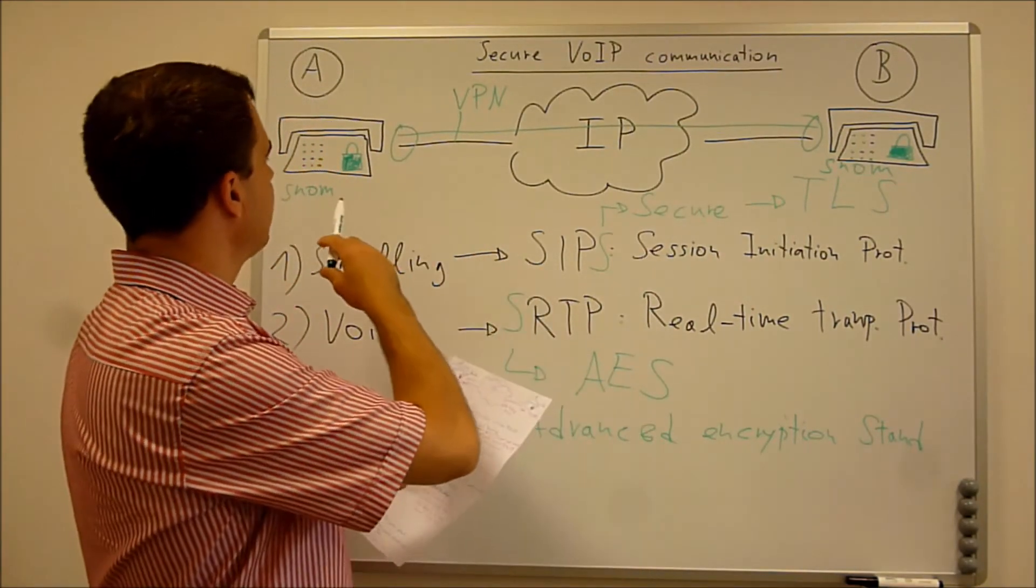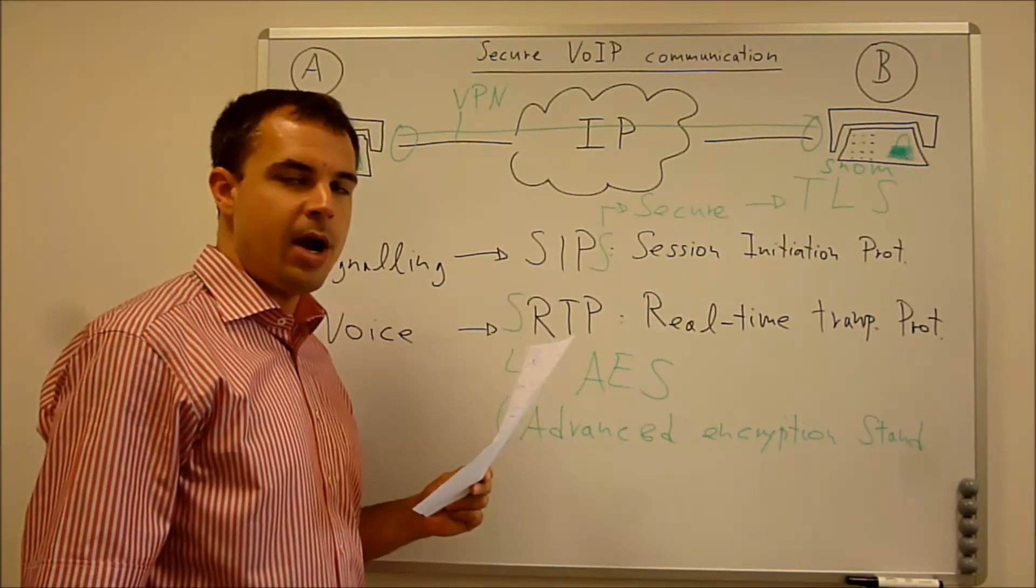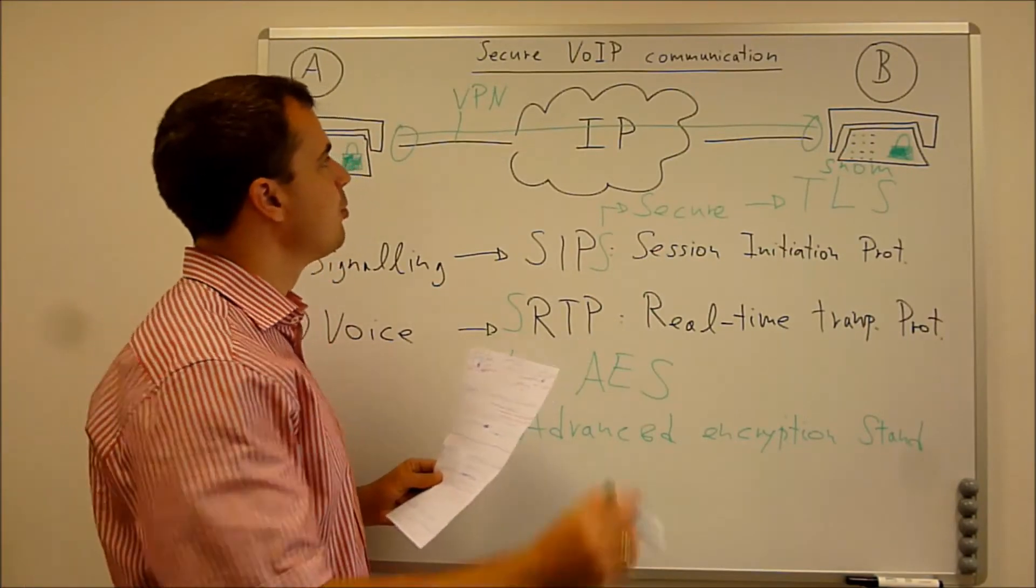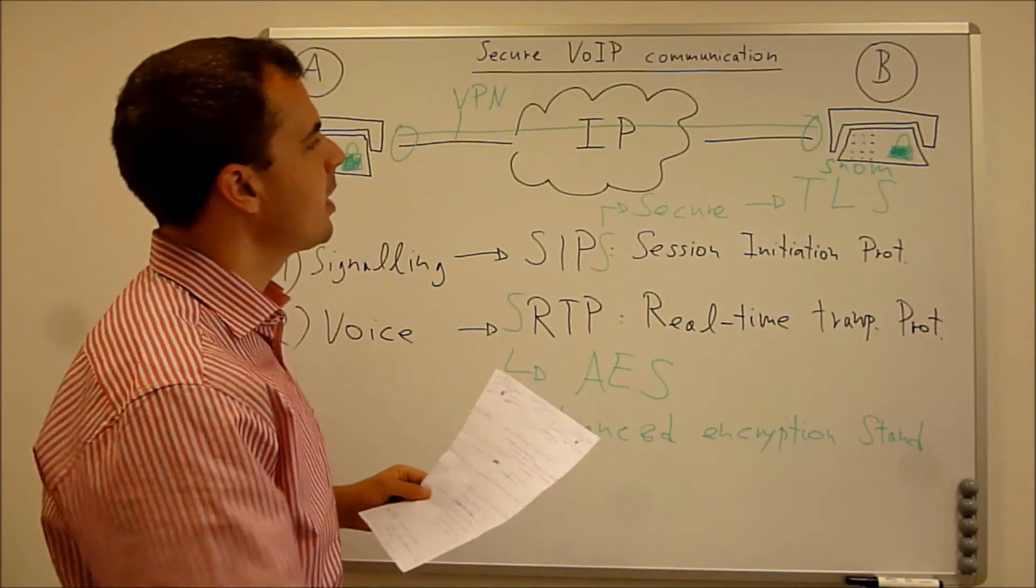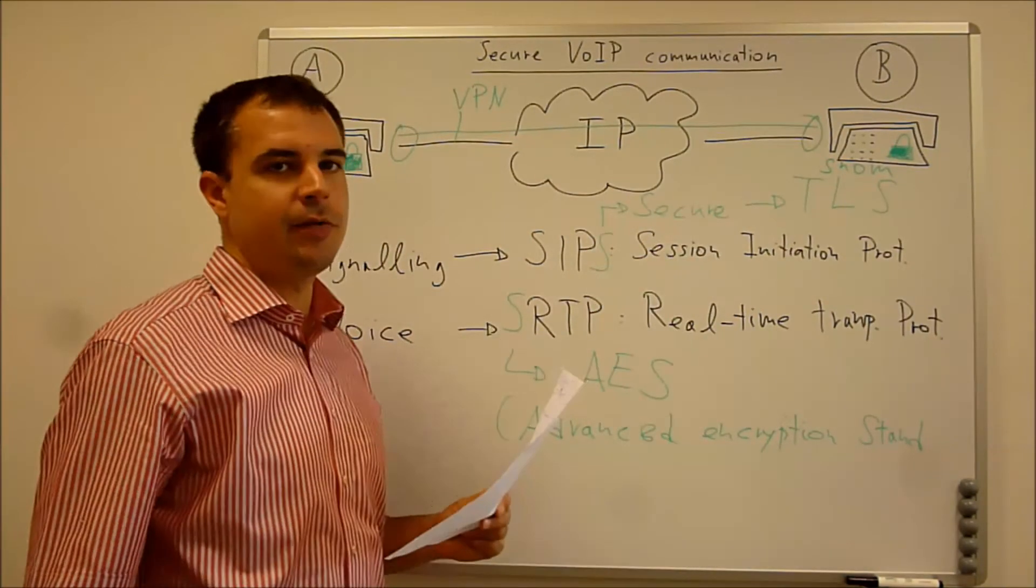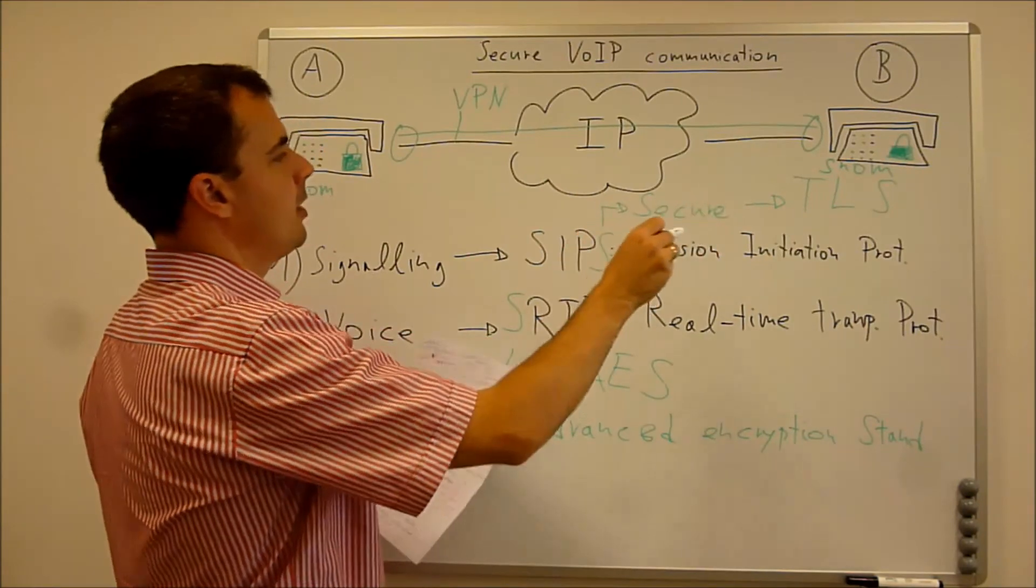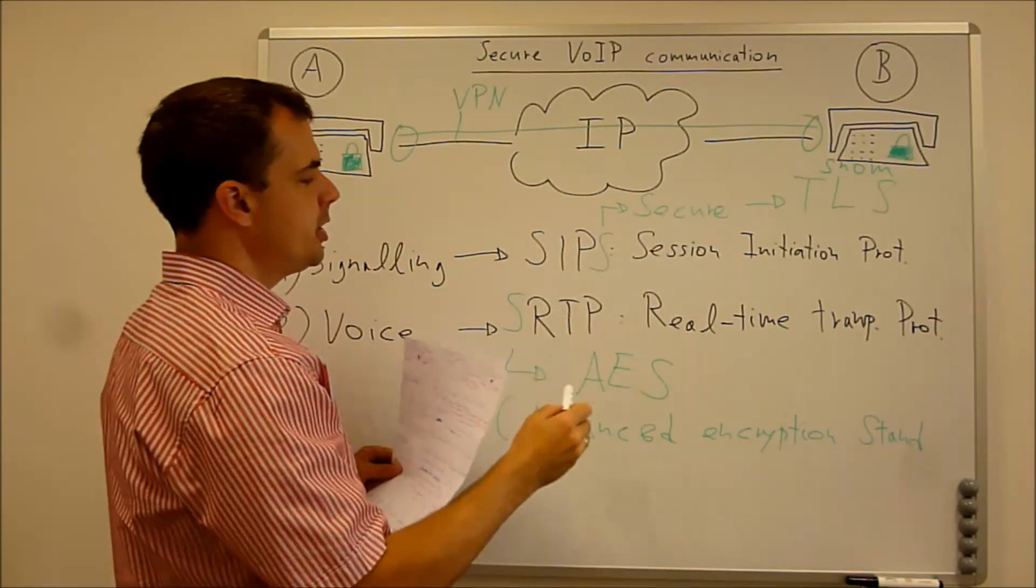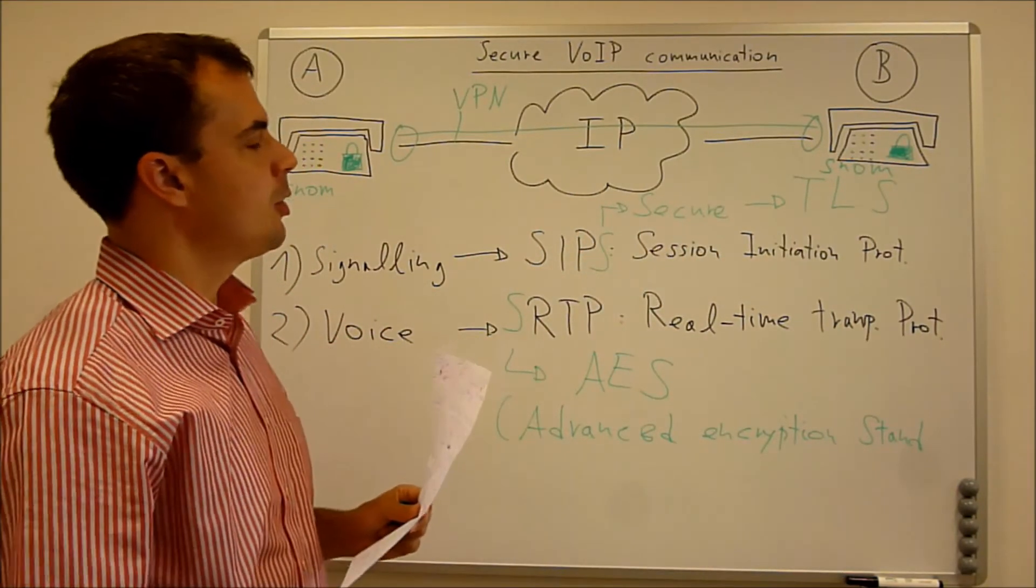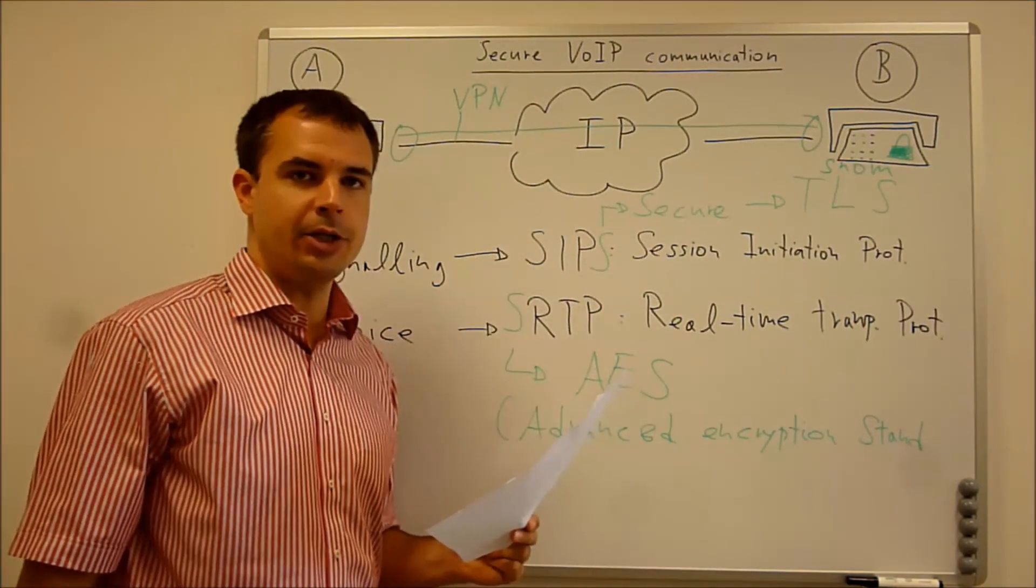And so SNOM 7 series and 8 series device, where it is stated that they are supporting the VPN function, they can establish a secure VPN tunnel information and can additionally use also the secure SIP and the SRTP. So you have two different ways of additional secure communication channels.